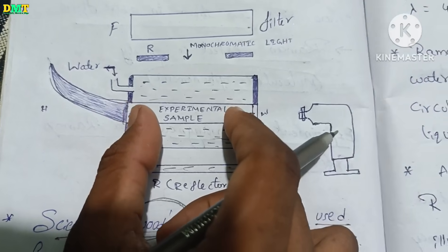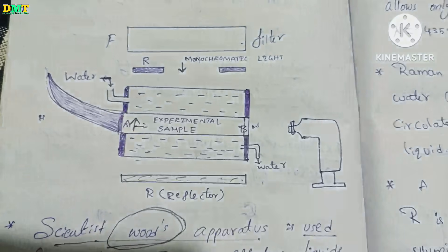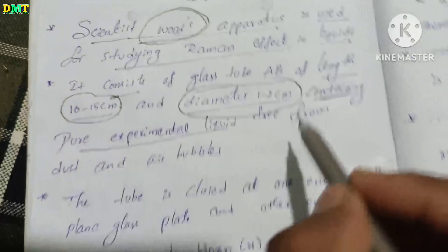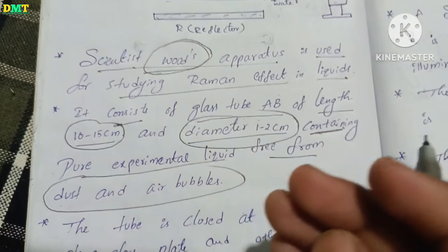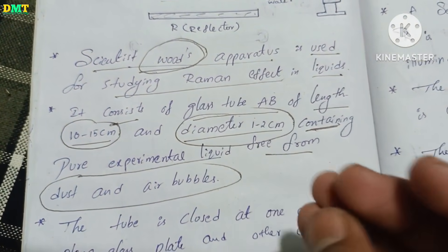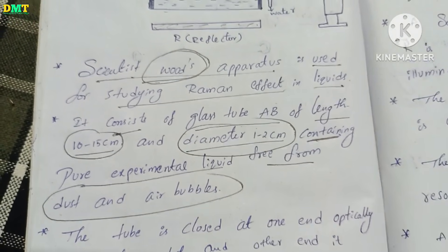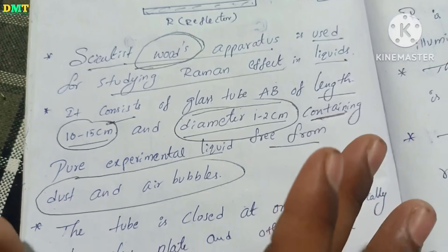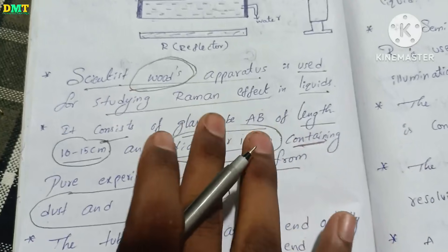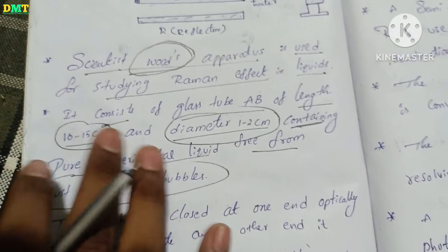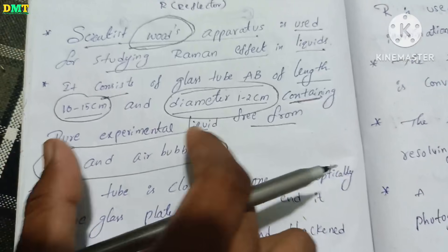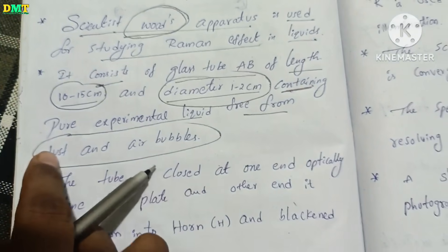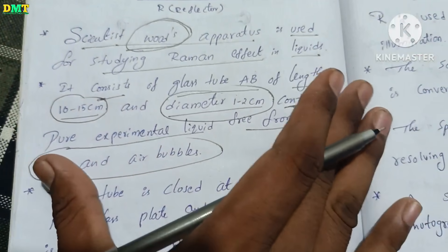The tube is filled with a pure experimental liquid, which must be free from dust and air bubbles. You can use a glass tube with this diameter, and you must use a pure experimental liquid free from air bubbles.